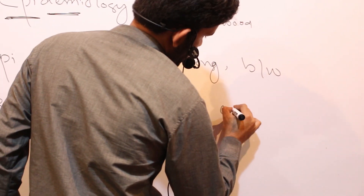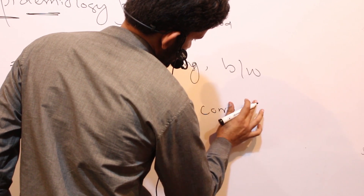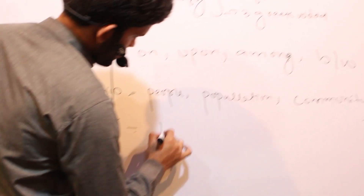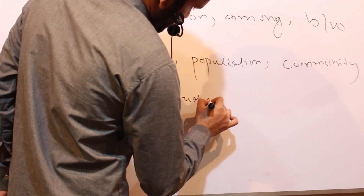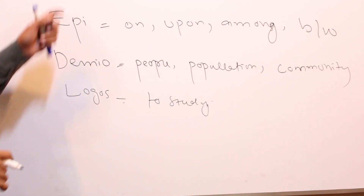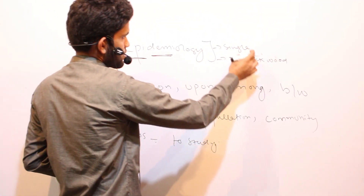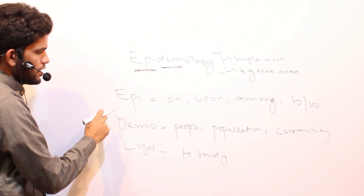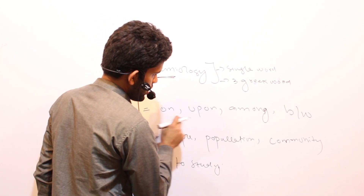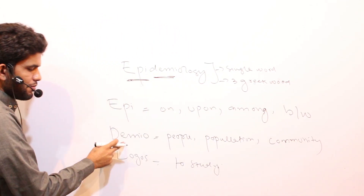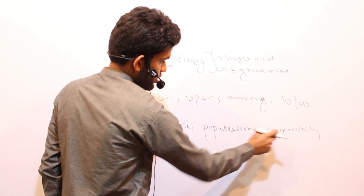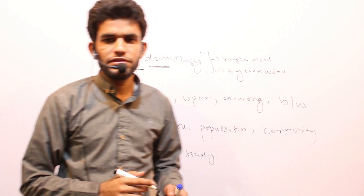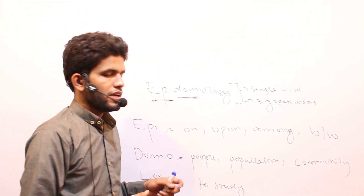'Demio' refers to the population or the community, and 'logos' simply means to study. So the word epidemiology is composed of three Greek words: 'epi' meaning upon, among, or between; 'demio' meaning the people, the population, or the community; and 'logos' meaning to study.